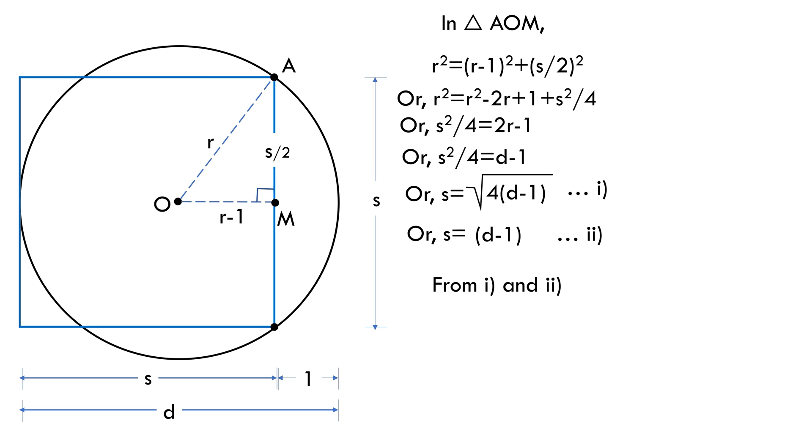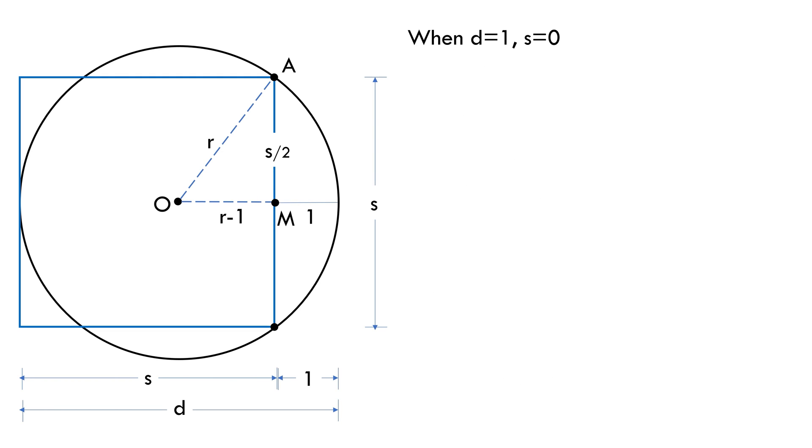From equation 1 and 2, we can write root of 4D minus 1 equals D minus 1. Upon solving this, we get D equals either 1 or 5. When D equals 1, side comes to be 0 units and thus the area of the square also comes to be 0 units. Now when D equals 5, side of the square will be 4 units and thus area equals 4 squared equals 16 square units.